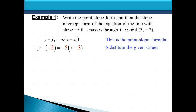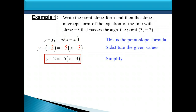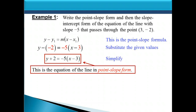This is almost our point-slope form. We do want to simplify a little bit. We will not distribute the negative 5 when simplifying for point-slope form, but we do want to simplify the minus and negative scenario. You can see y minus negative 2 on the left side — that simplifies to y plus 2. So this gives us our final point-slope form, and the right side is kept as is.